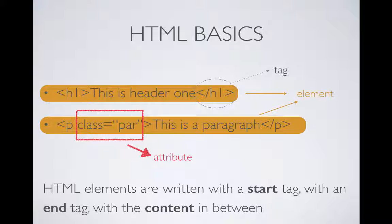Let's look at some HTML basics. There are three key things in HTML: tag, element, and attribute. An element is written with a start tag and ends with a closing end tag, with content between these tags. In HTML, the end tag is represented by an additional slash compared to the start tag. A tag is the whole text with the opening and closing arrow, as shown in the slide.